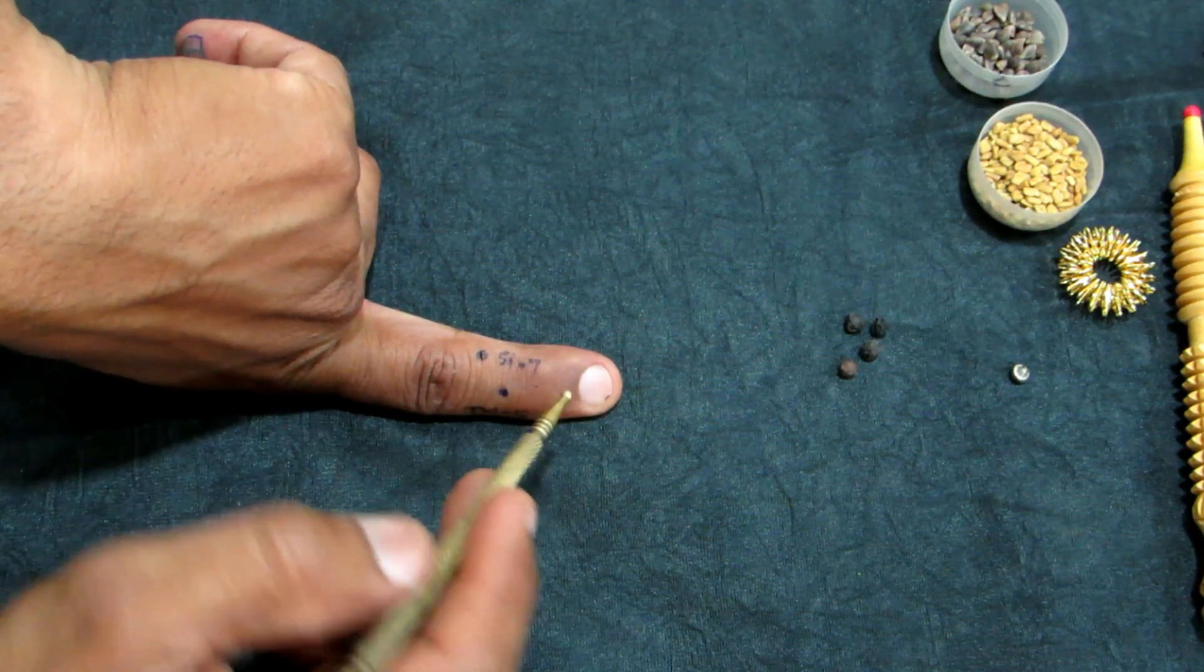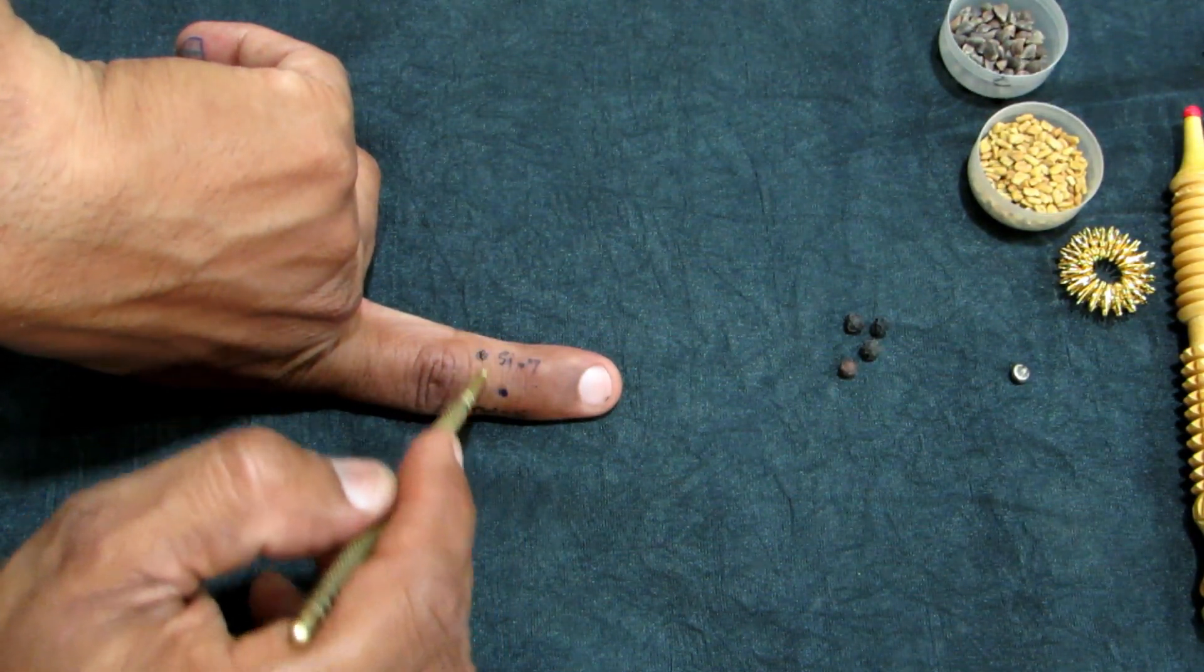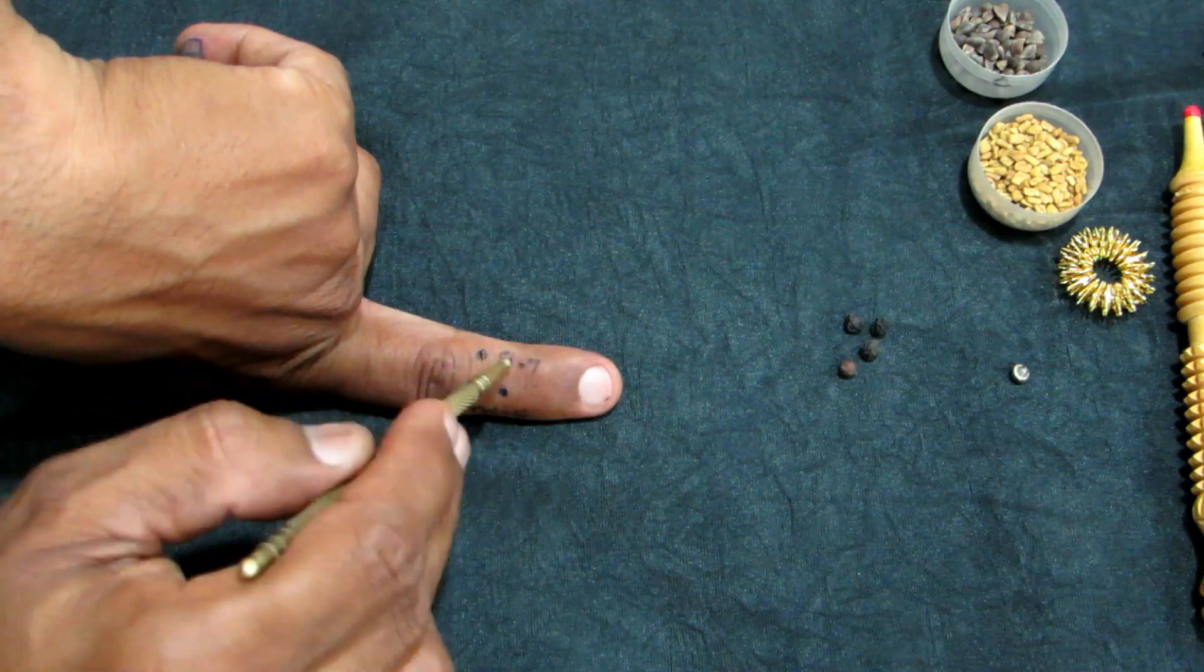Our last point is a small intestine point on the outer side of the finger.